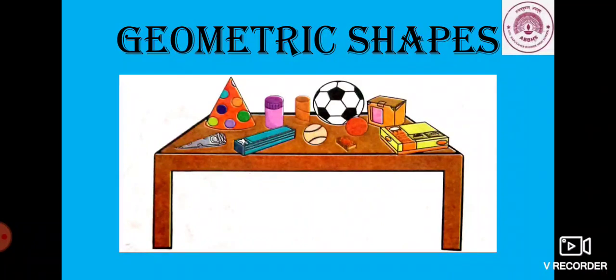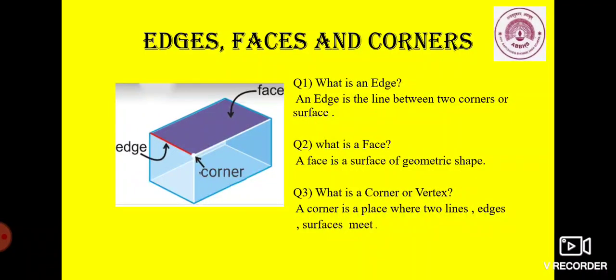For that, we need to learn and understand the concept of edges, faces and corners. So, students, what is an edge? An edge is a line between two corners and surface. What is a face? A face is a surface of geometric shape.